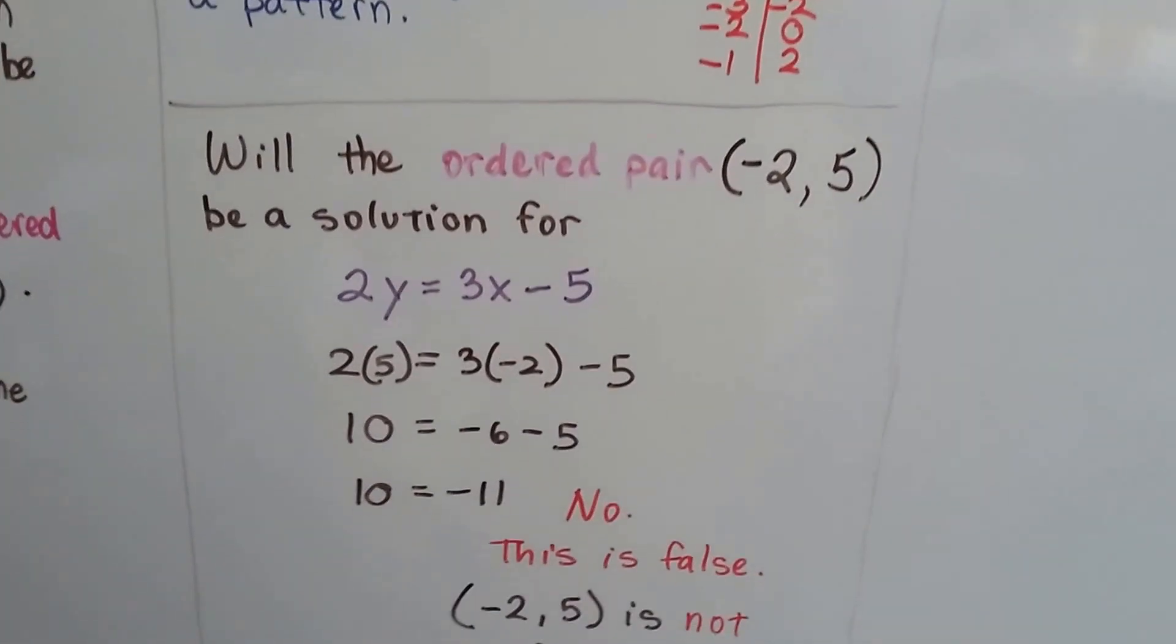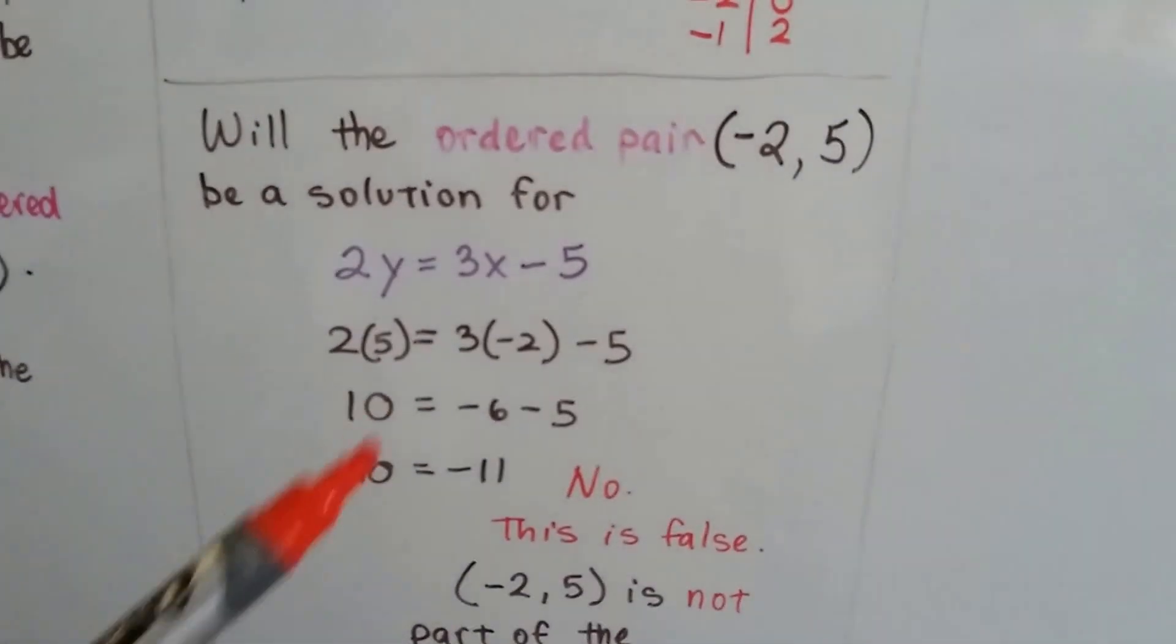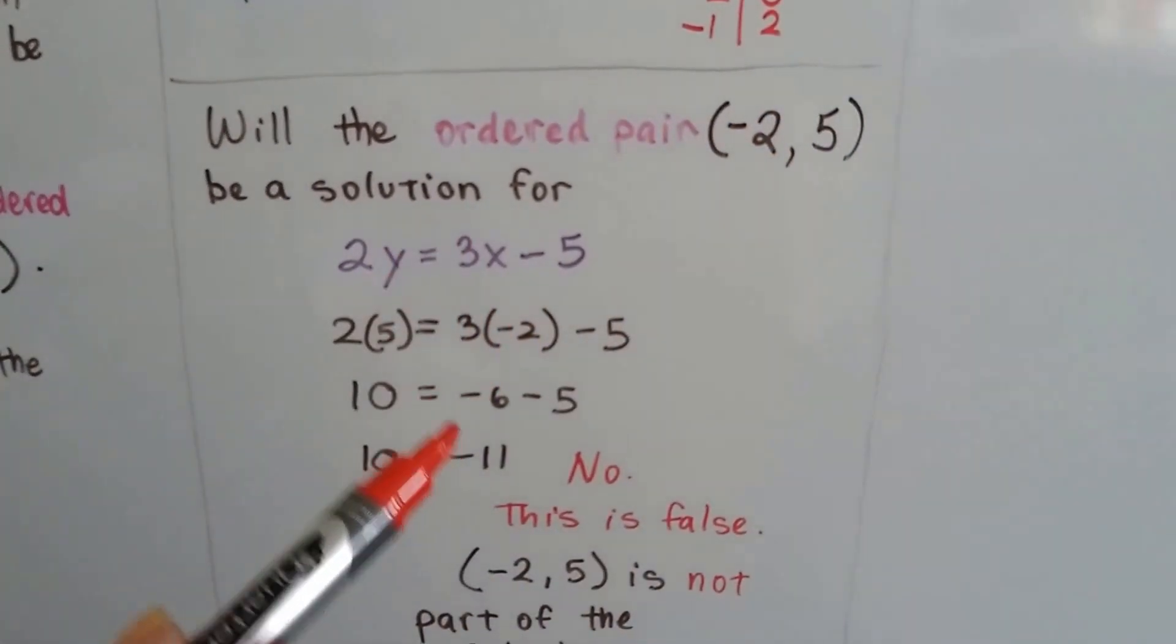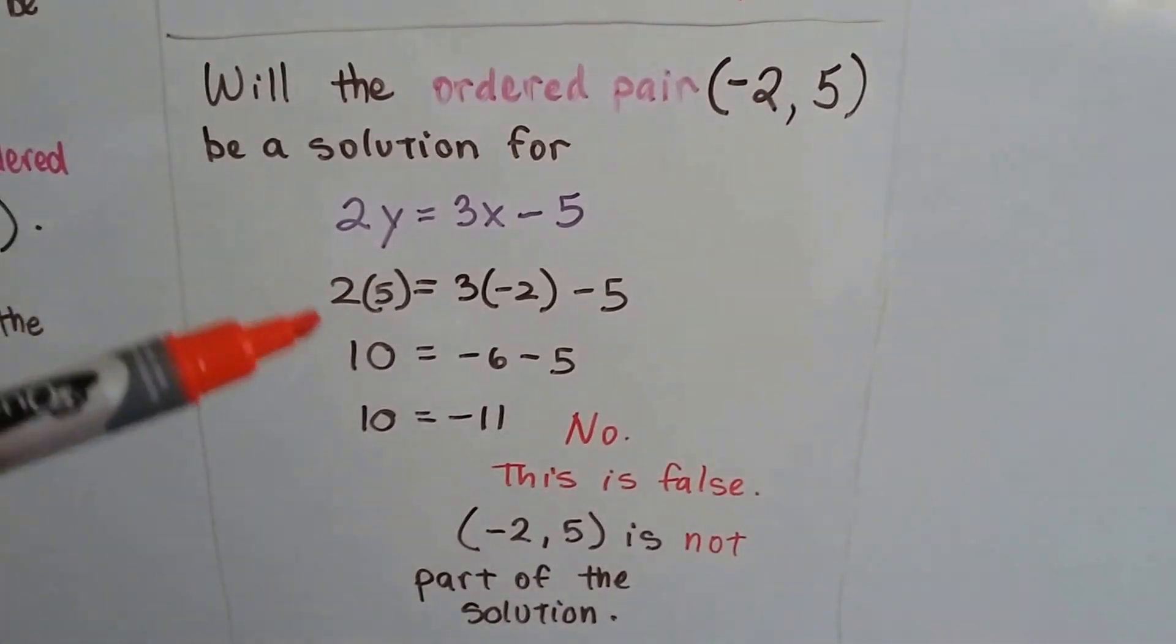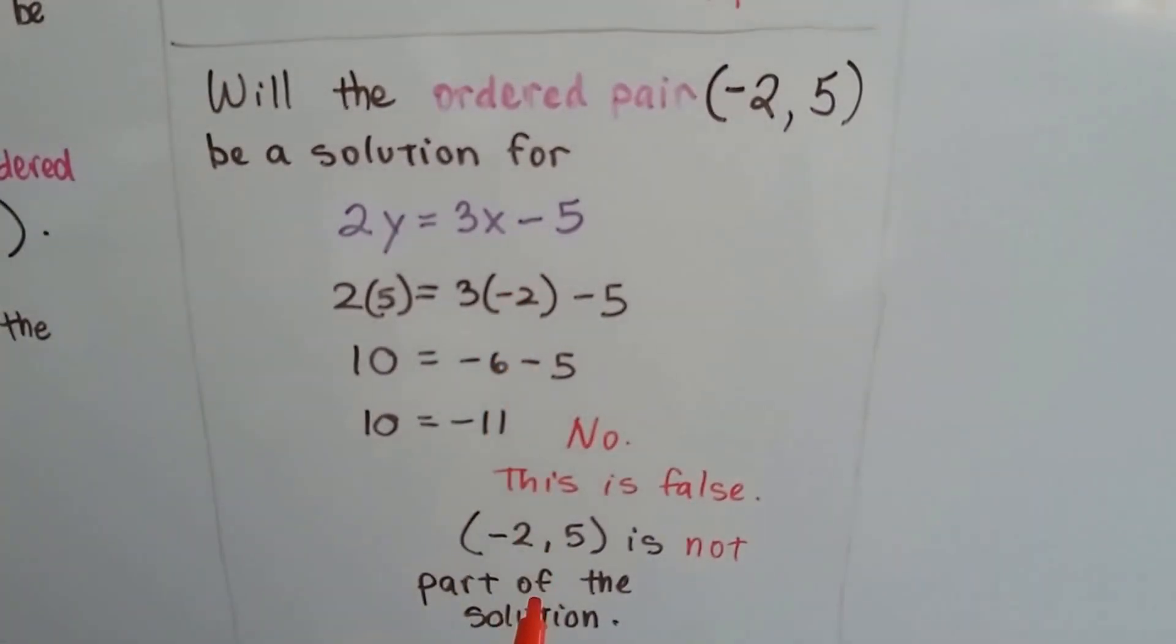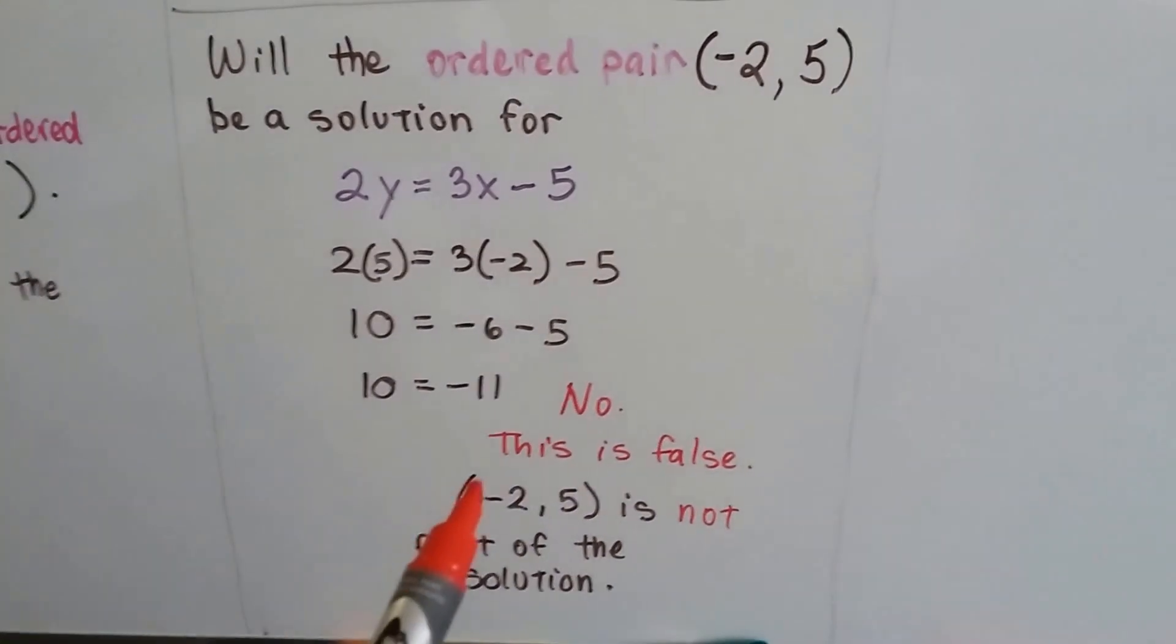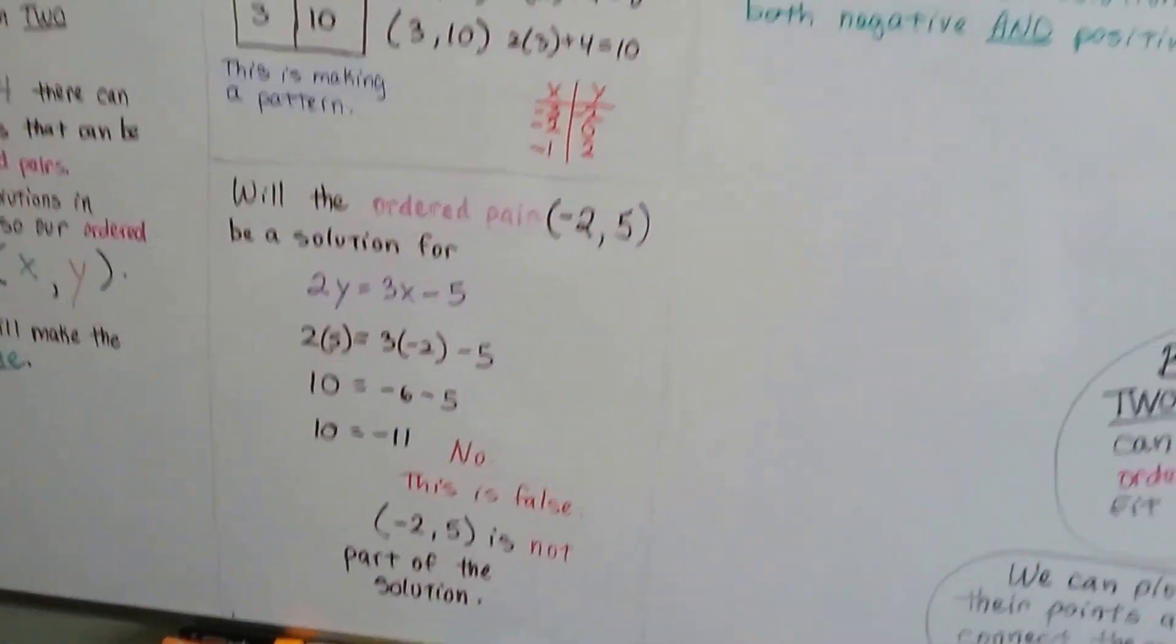How about this one? Will the ordered pair negative 2, 5 be a solution for this equation? All we have to do is write it underneath it with those numbers plugged in to those values. So for x, we put a negative 2. And for y, we put a 5. And we solve it. 2 times 5 is 10. So this side of the equal sign is a 10. 3 times negative 2 is negative 6. We take the 5 away and get negative 11. So no, this is false. This ordered pair is not a solution.